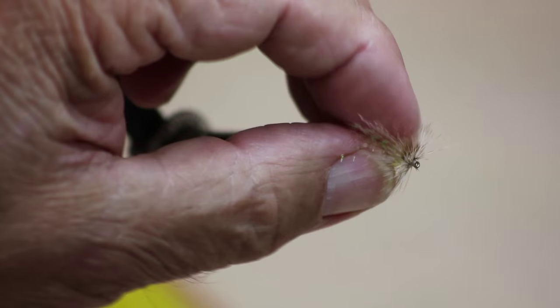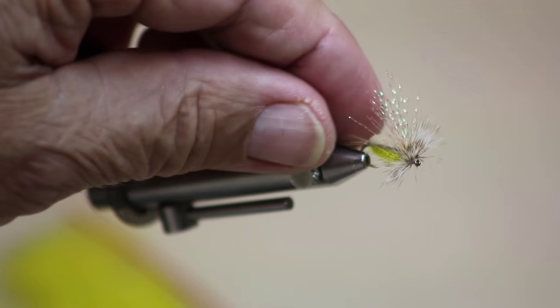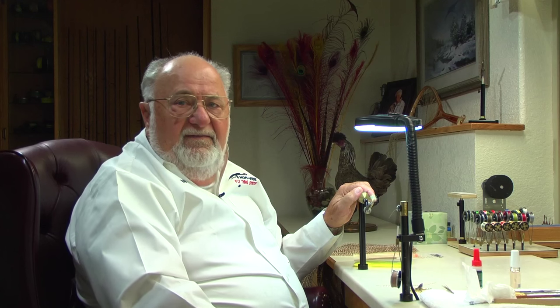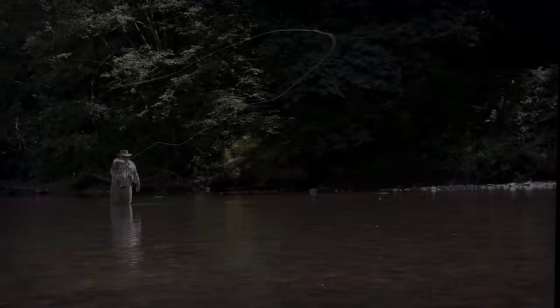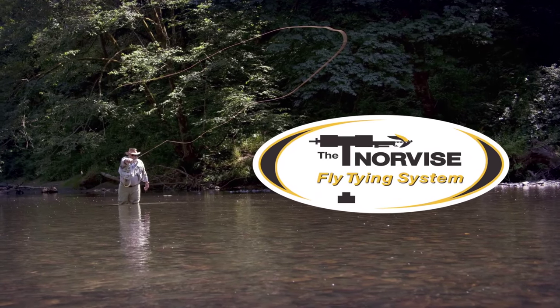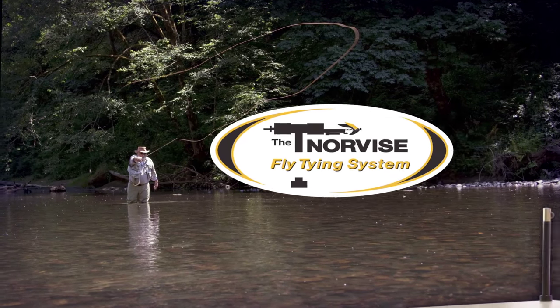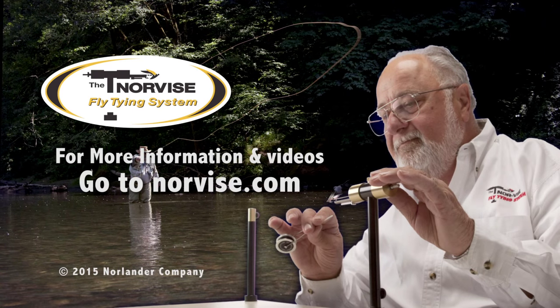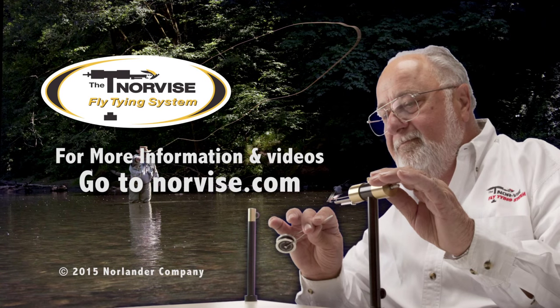Probably a little dab of head cement on there would be a great idea. But, you know, you look at that thing. That little thing will float like a cork. And the fish will just jump all over it. It's a great fly. You're going to love it.